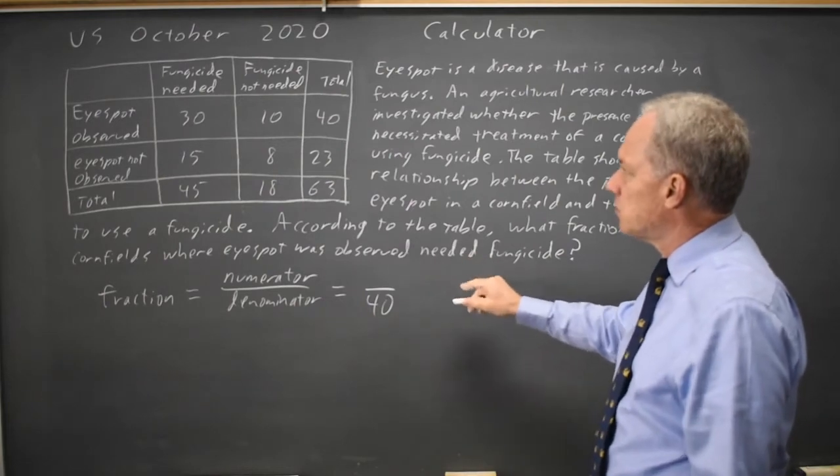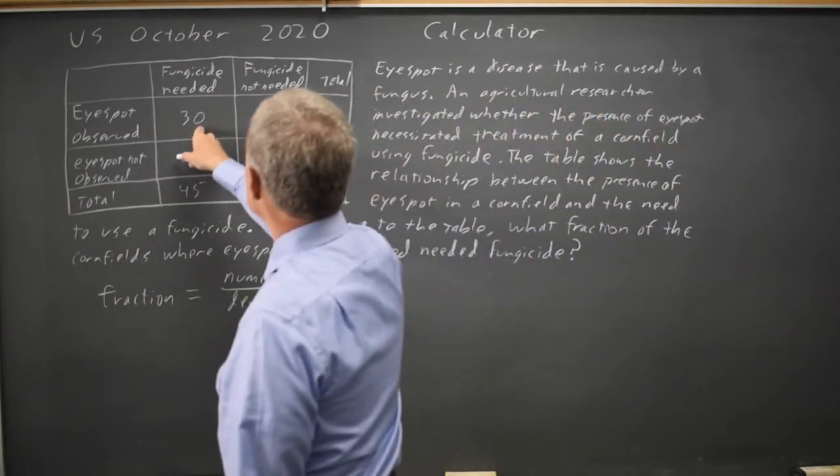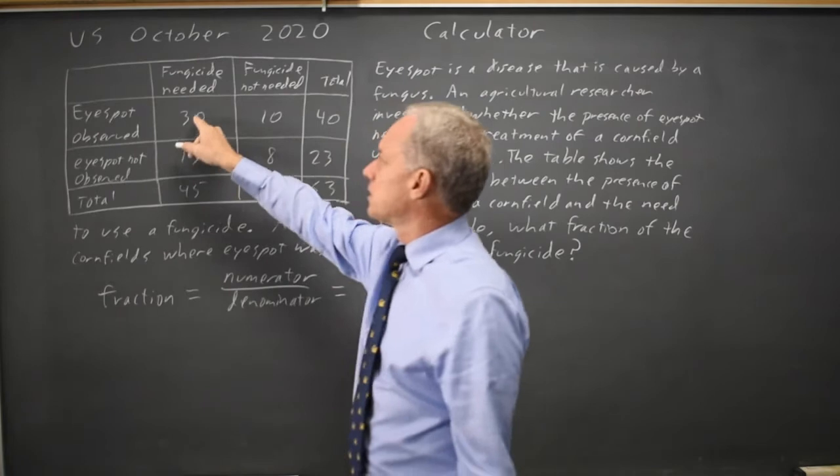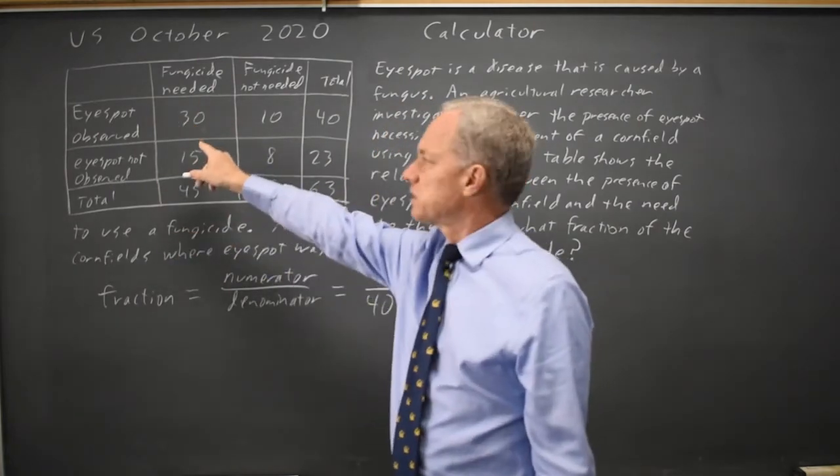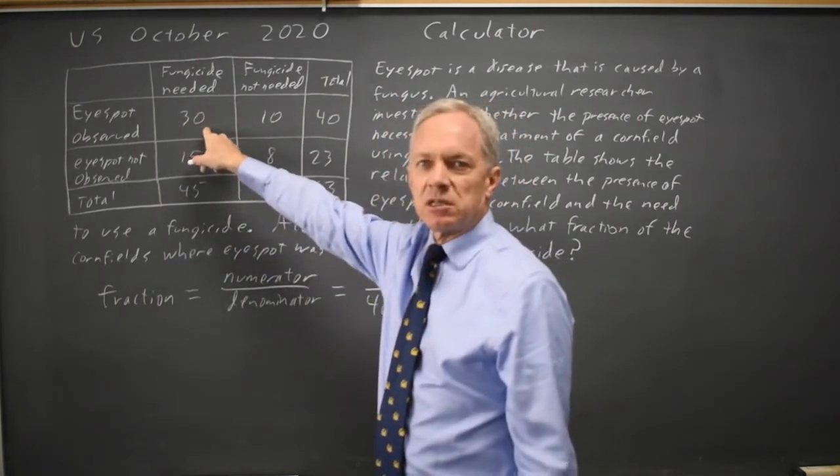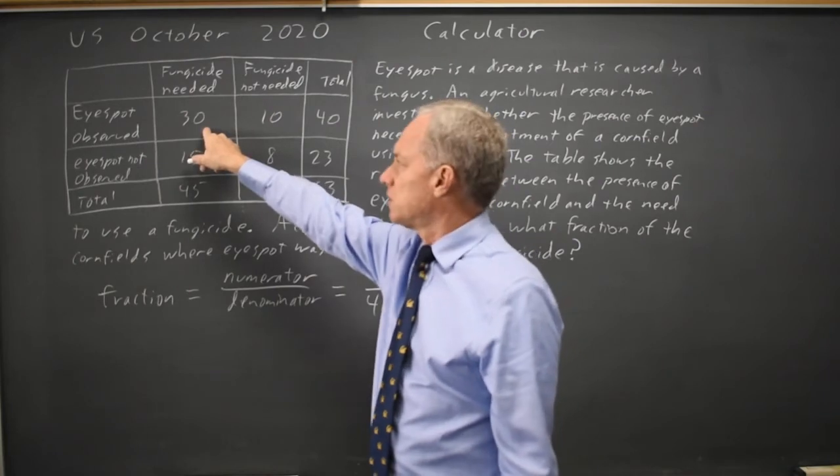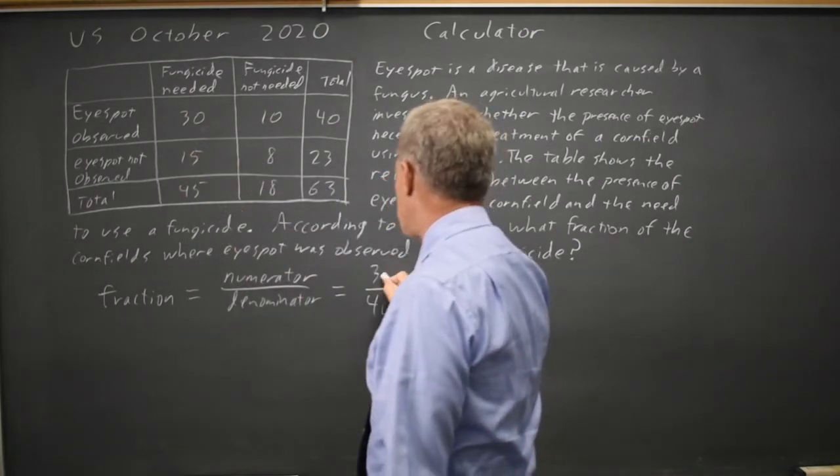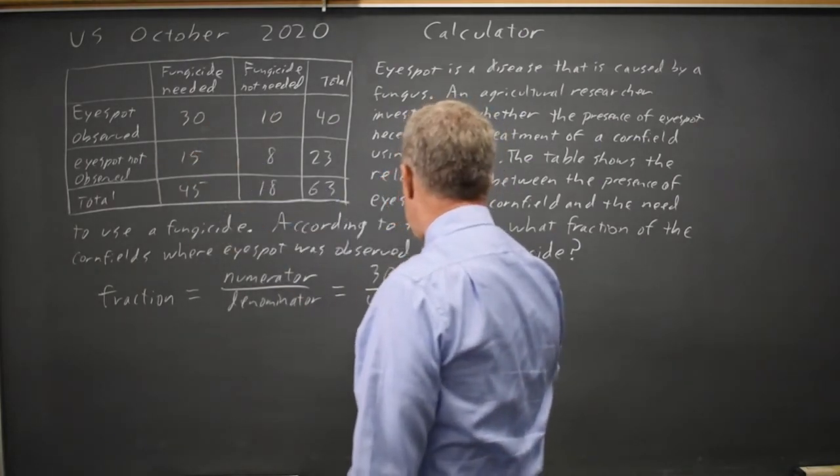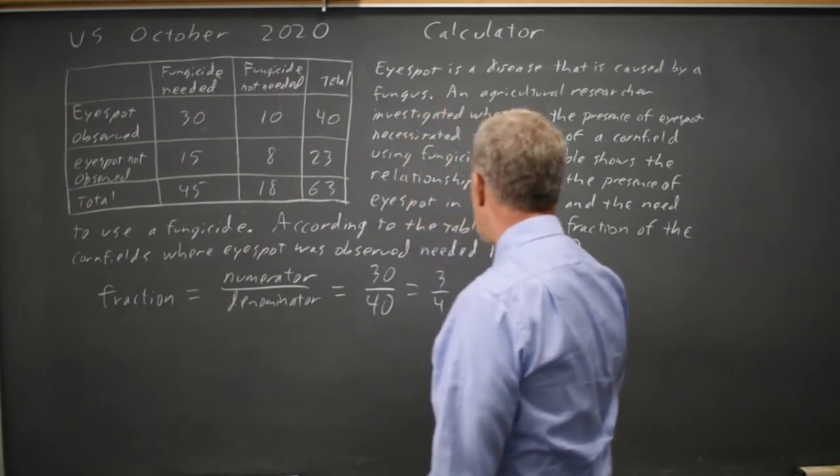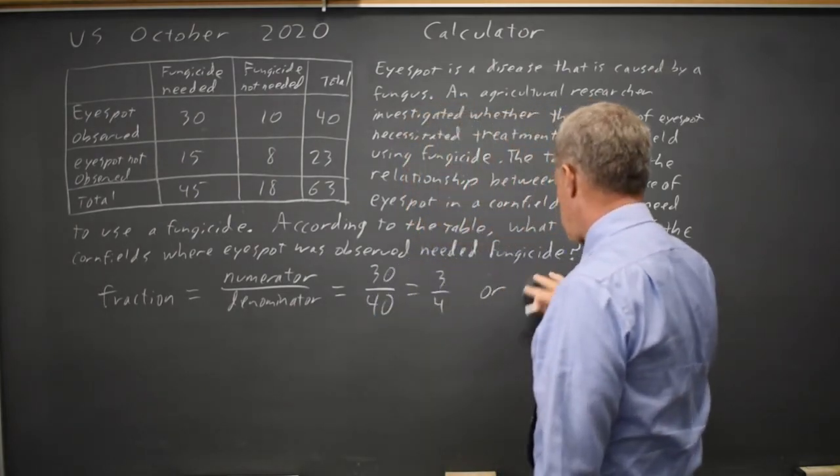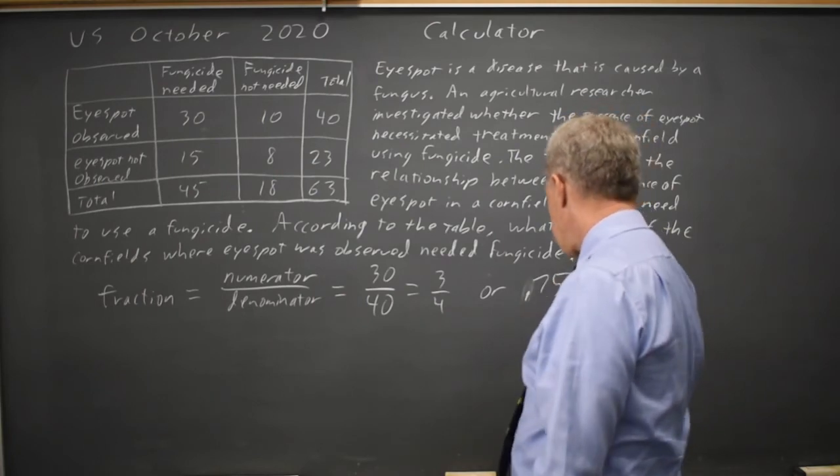And then they say, needed fungicide, so of those 40, which ones needed fungicide? So it's not all the ones that needed fungicide, it's just the ones out of those 40 in our denominator, and that is 30 of 40, which I would simplify to 3 over 4, or 0.75.